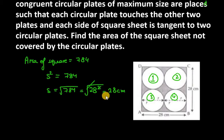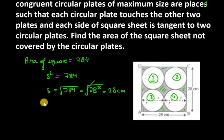We have to find the area of the square sheet not covered by the circular plates — that is the gray or black part in the figure. The area of the square is given as 784, and from that we subtract the area of these 4 circles. First of all, we need to know the radius of the circle.